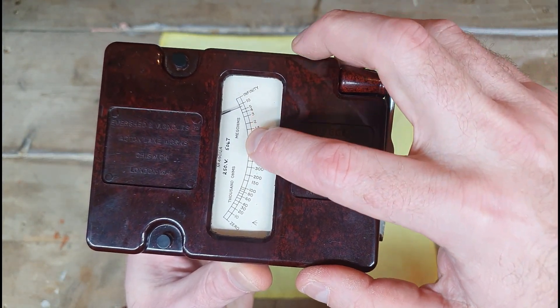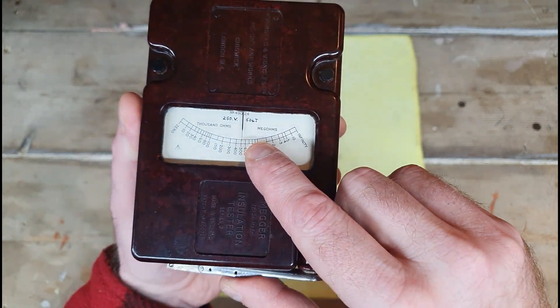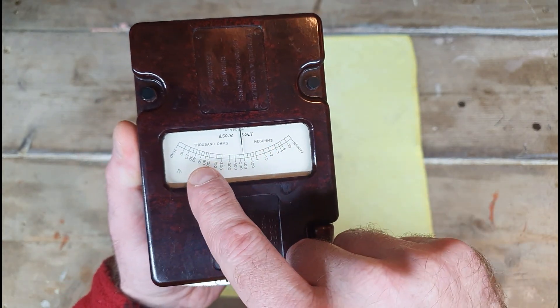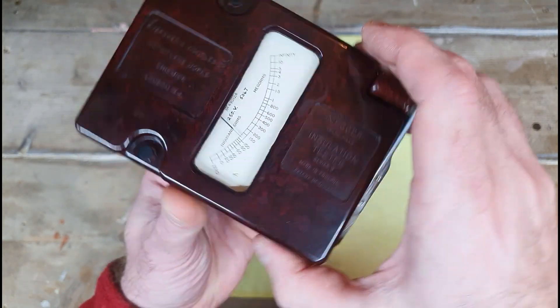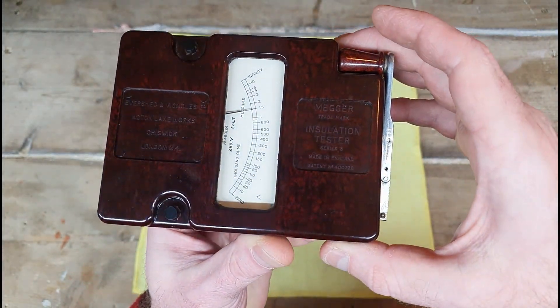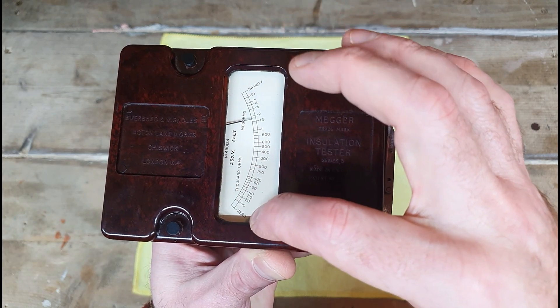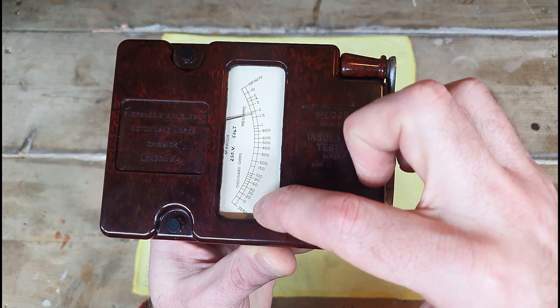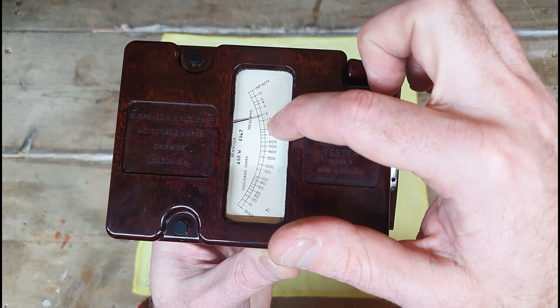If I bring it even closer you can see we've got some scales here. We've got megaohm, we've got 1000 ohm, and then 250 volt there. Spin it back this way and you can see we've got zero written down there all the way up to one megaohm, two, three, four, five, ten, and infinity.